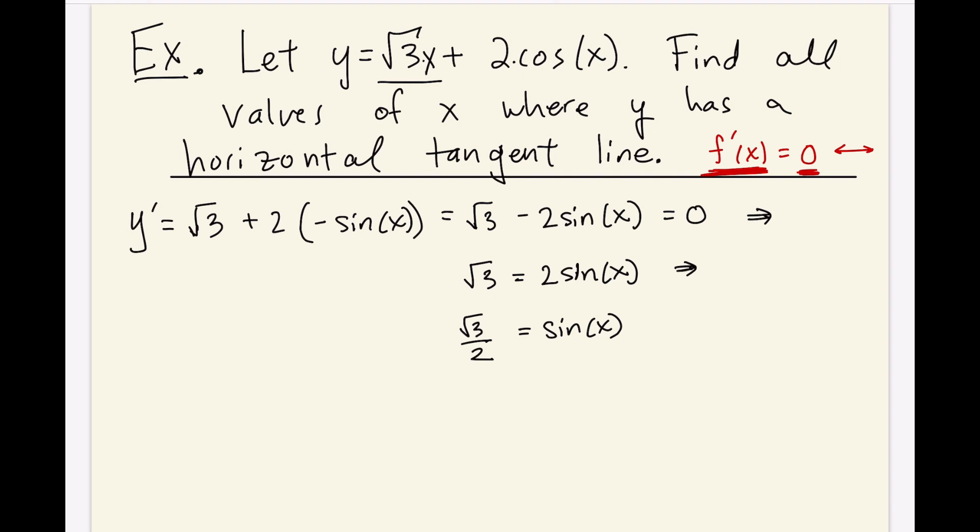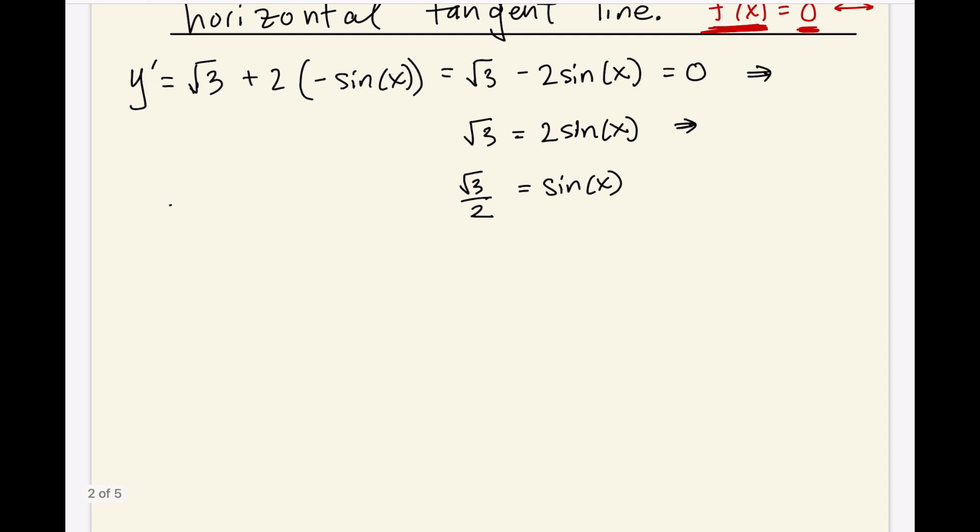So the question is, that happens infinitely many times, right? And so let's just look at one instance of where this might happen. So when is sin(x) equal to root 3 over 2? You might remember that sin(60 degrees), which is the same as sin(π/3), is equal to root 3 over 2. Okay, so let me just draw quickly, give you a little picture of what that looks like.